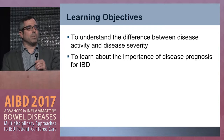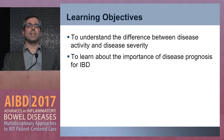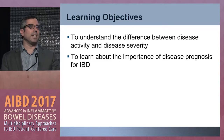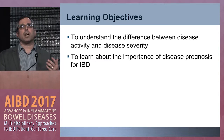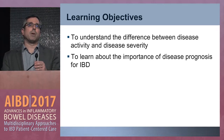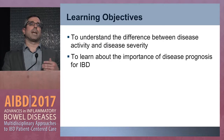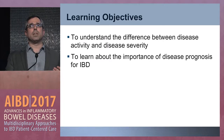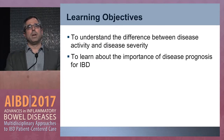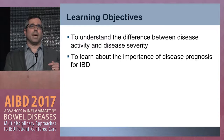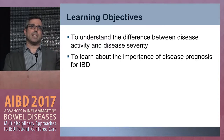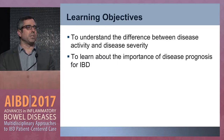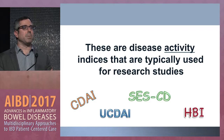We'll talk about how to understand the difference between disease activity and disease severity, and then talk about prognosis — how can we help our patients understand what the future might look like for them, which I would argue is much more important than what their symptoms are today. Thinking about what's happening next and preventing complications is where we really need to be.